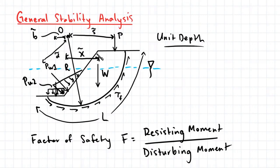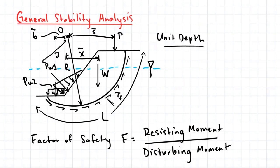Here we have a slope experiencing rotational slip, which we have assumed to be circular. We've set a center here, and the distance from the center to the slip surface is a radius r. Along the slip surface there are shear stresses which are experienced, and this resists the rotational movement of the soil element.